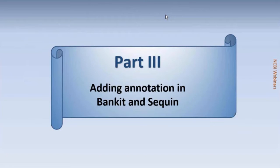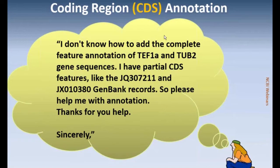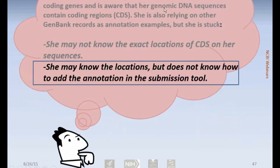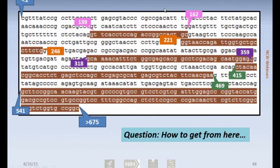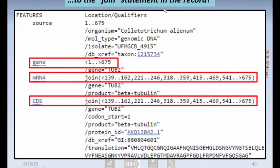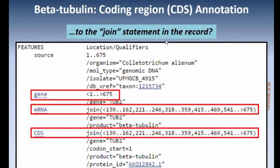Now let's talk for a few minutes about how you actually add the annotation in the two submission tools. Our submitter needs help with how to do it in the submission tool. This is their beta-tubulin sequence with the exons highlighted, and what we want to do is get from this with the specific nucleotide numbers to the features that we see in a GenBank display record.